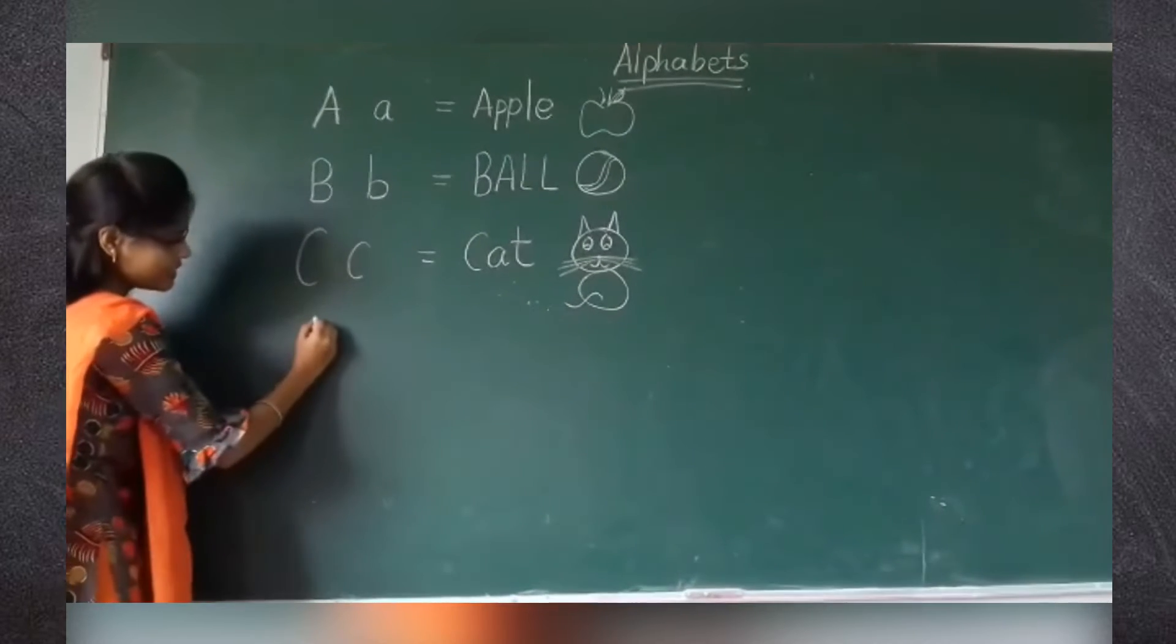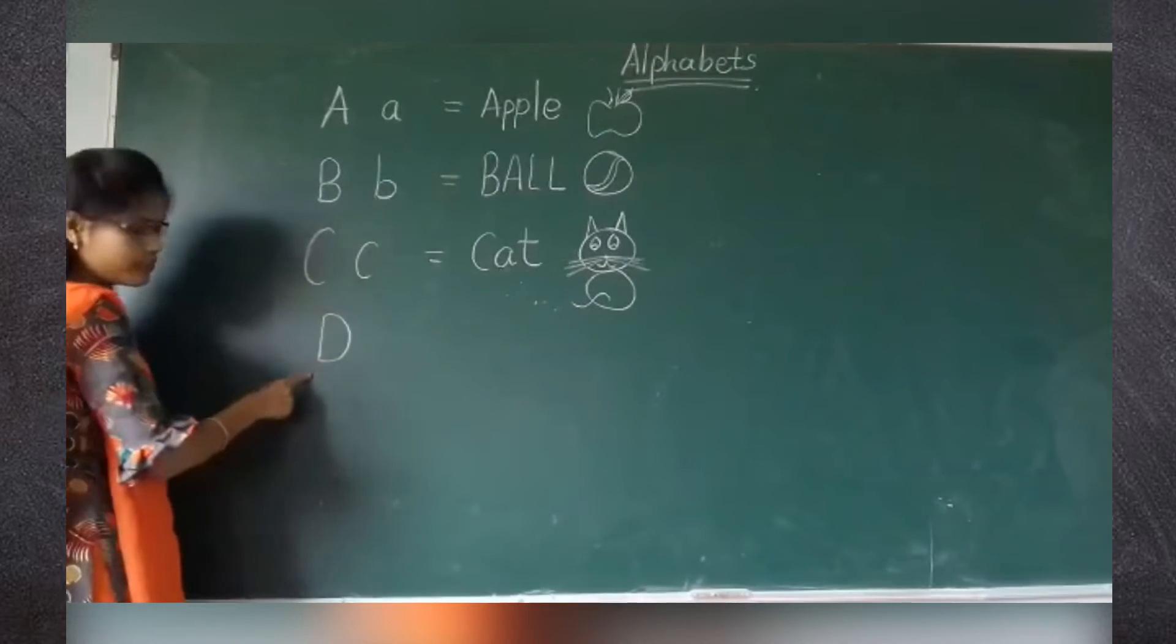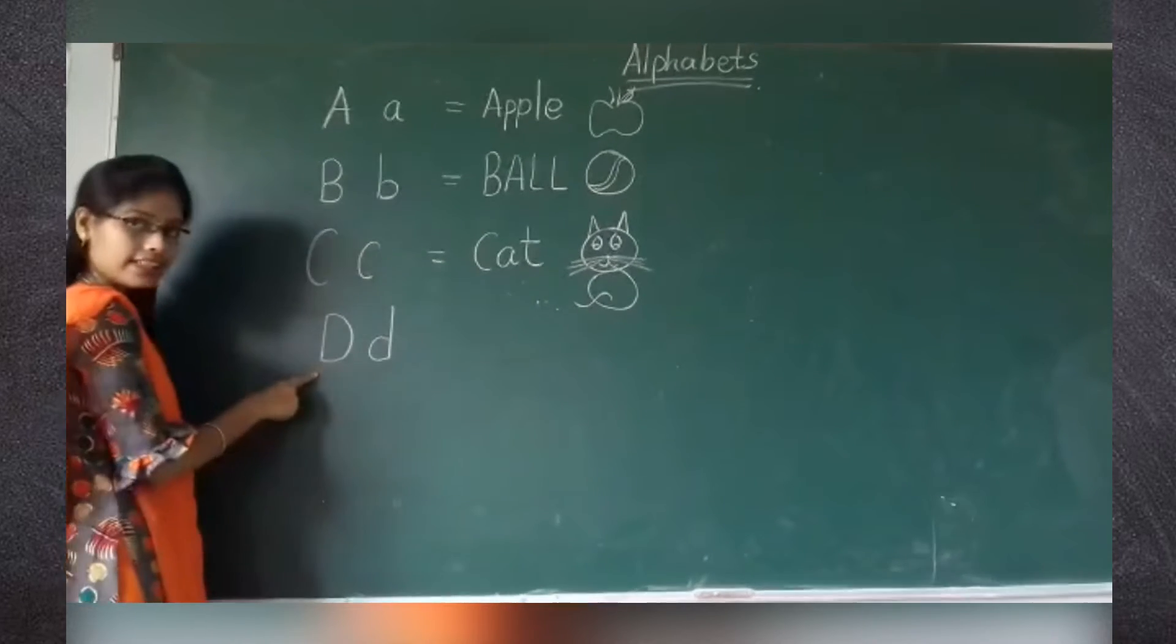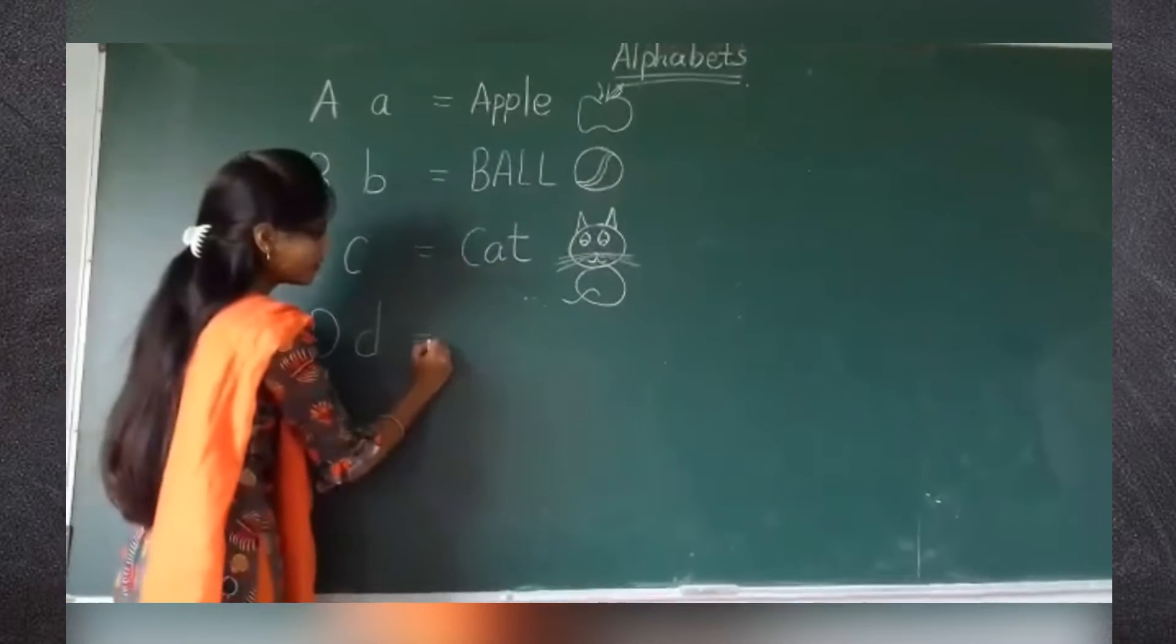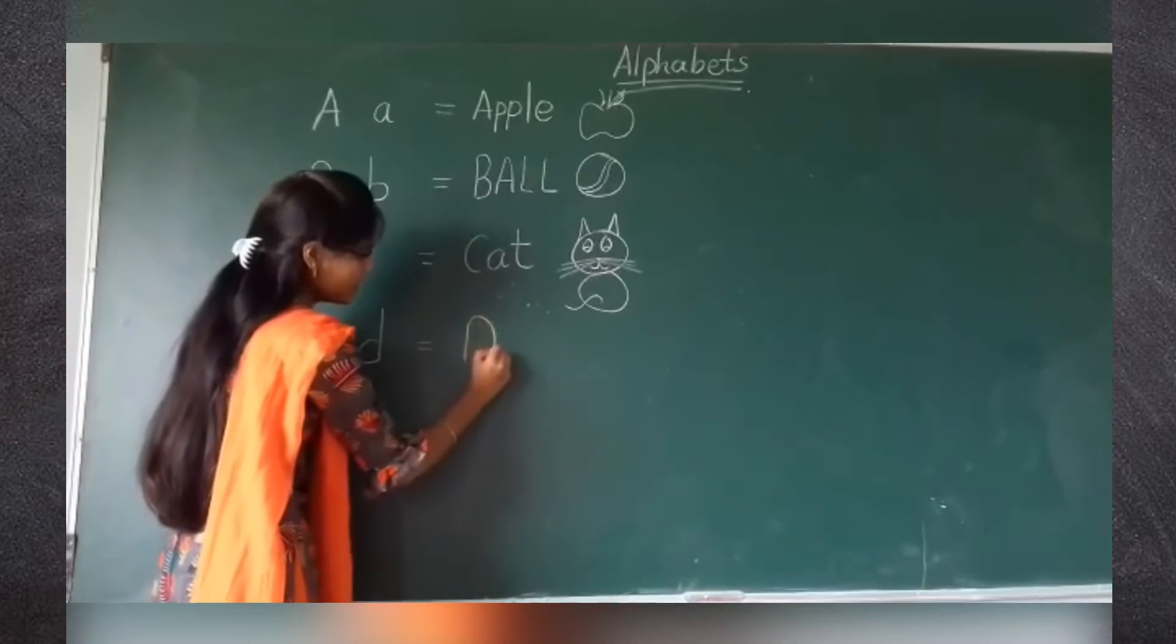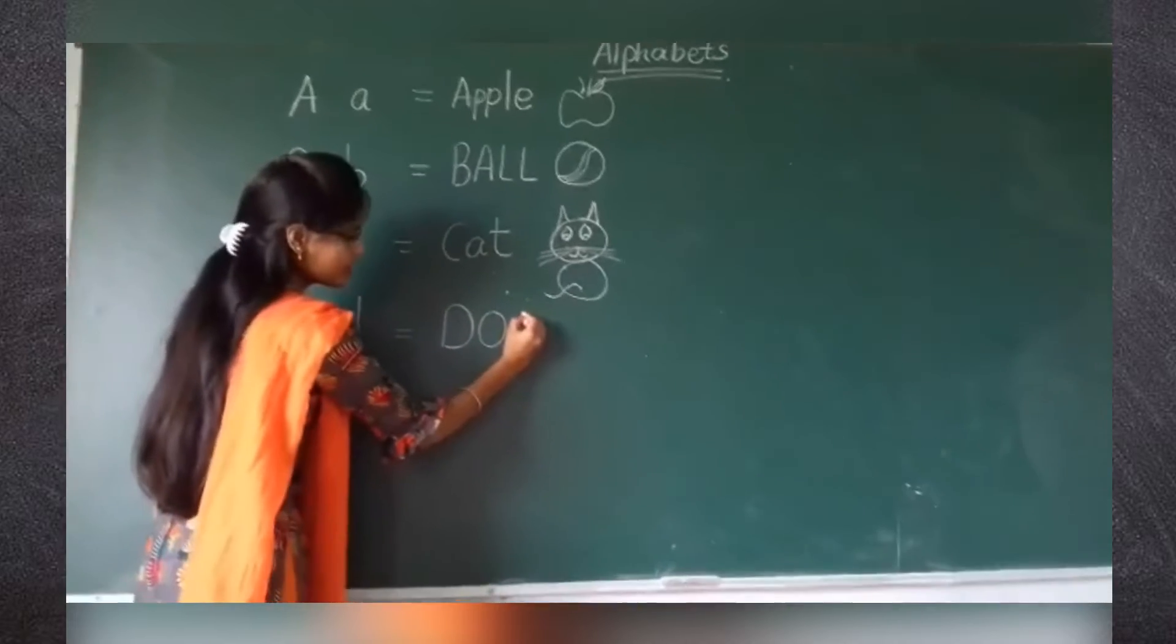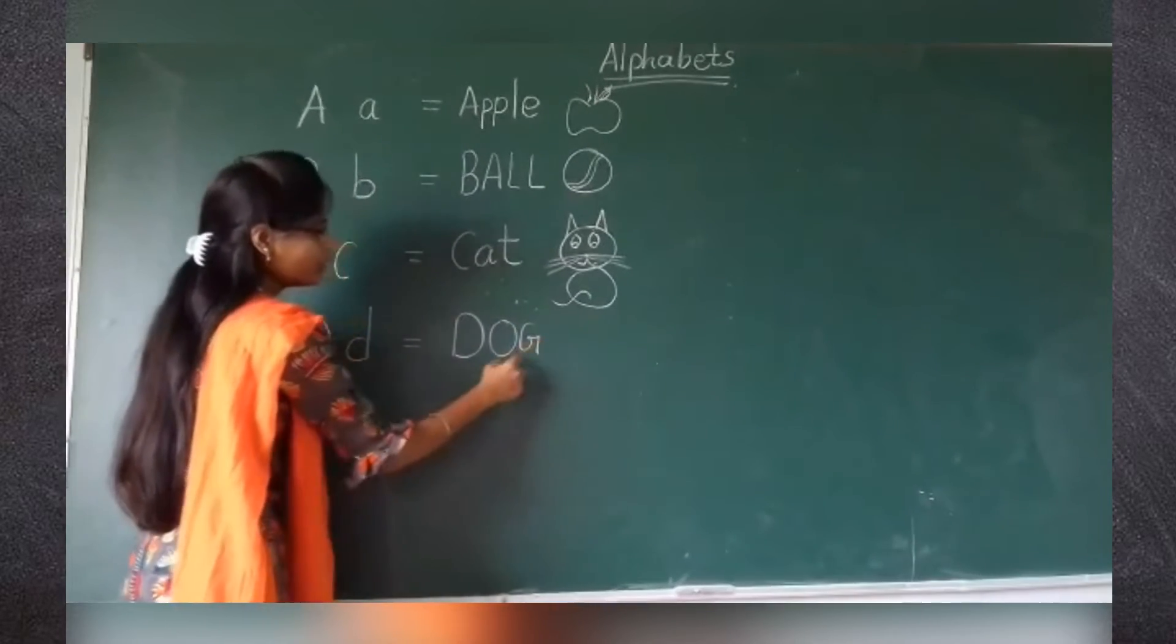Now next one is D. D for dog. Capital D and this is small d. D for dog. Spelling of dog is D-O-G. Dog.